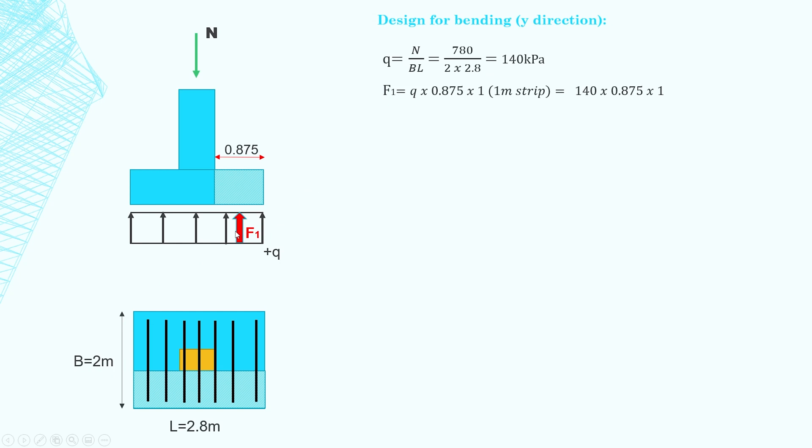Again, force equals pressure times area. Then for one meter width of footing, we get that F1 is 122.5 kilonewtons. Moment is force times distance. So M equals F1 times 0.875 over 2. Half of 0.875 is the distance between the force and the point which we are calculating the moment, which is the face of the column. So we work out the moment and M equals 54 kilonewton meters per meter width of the footing.